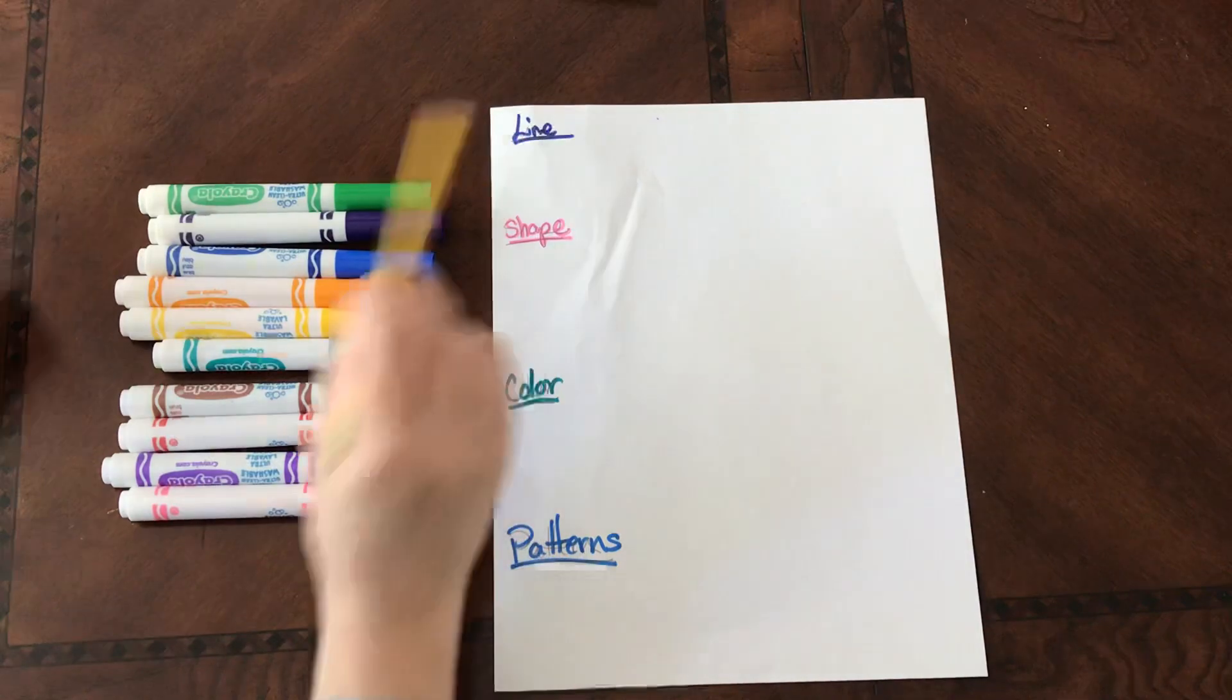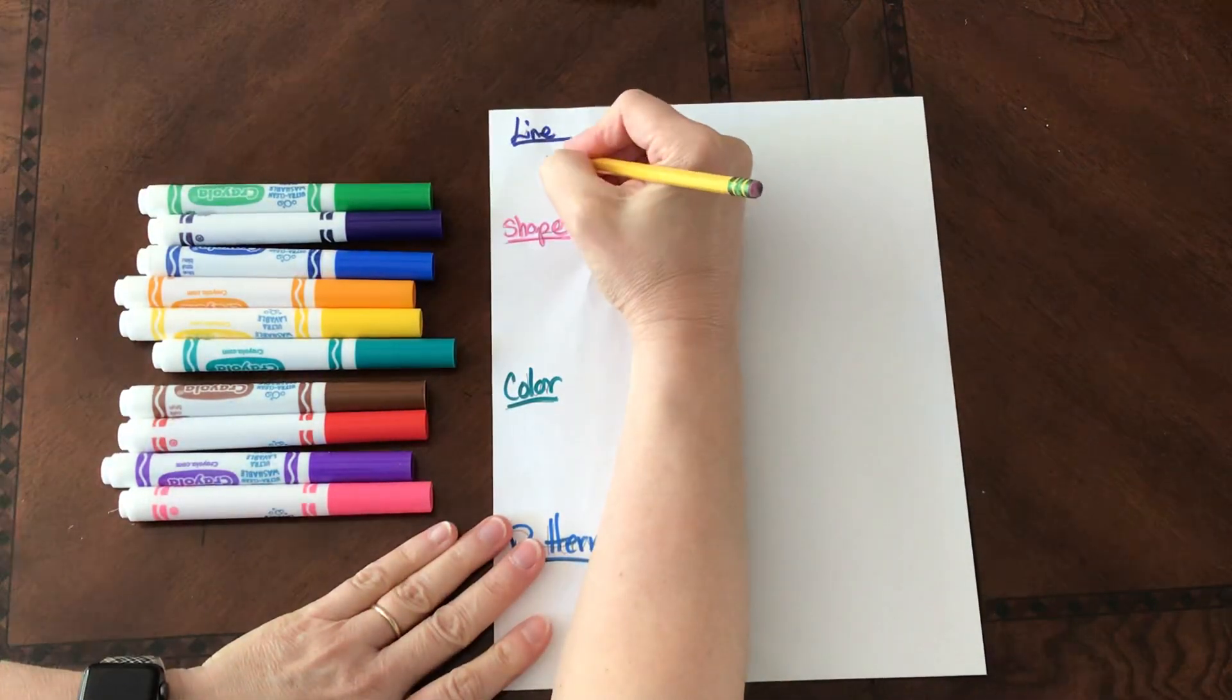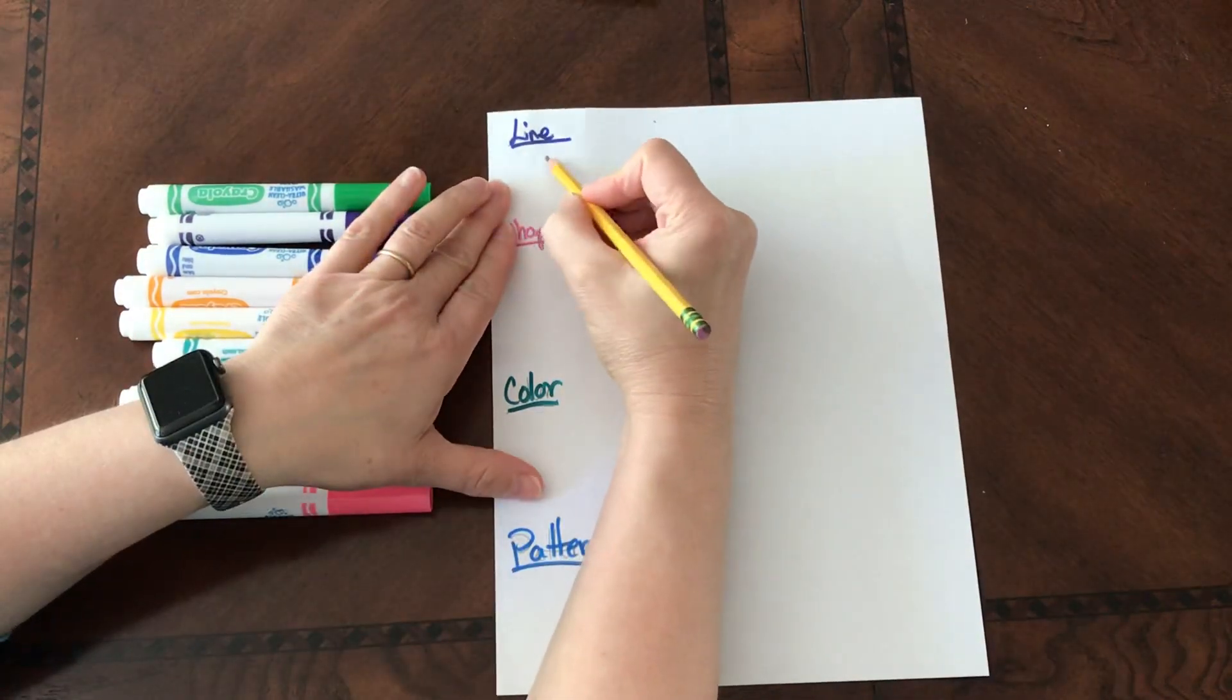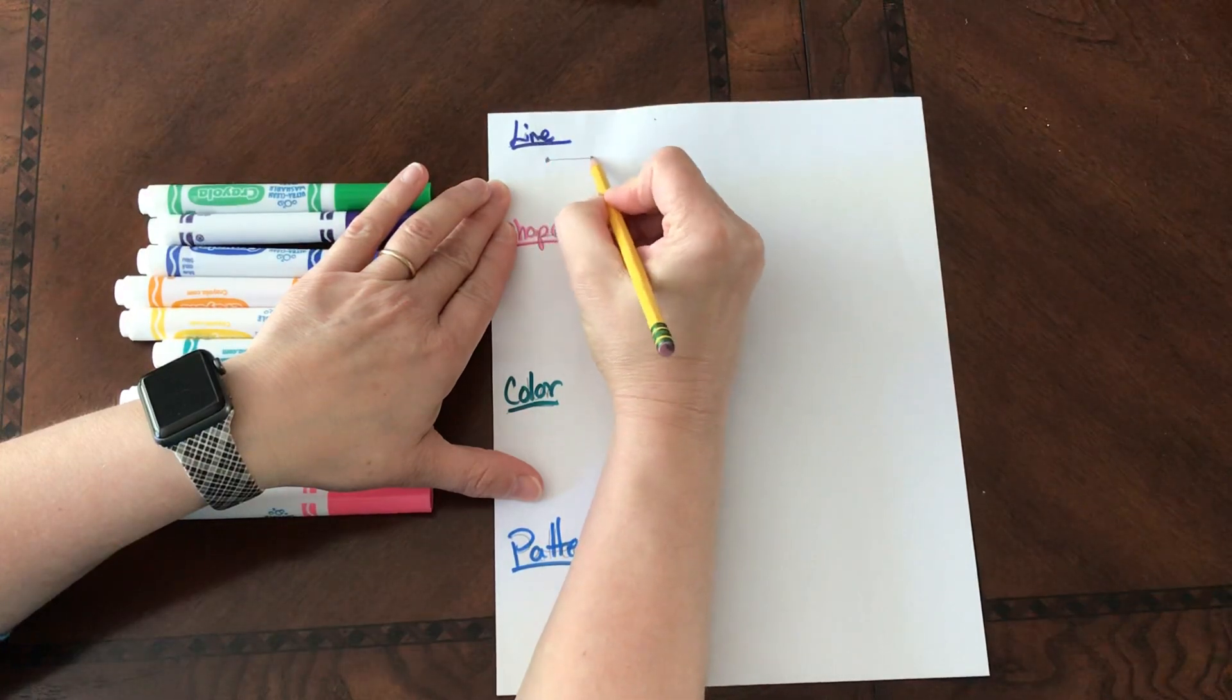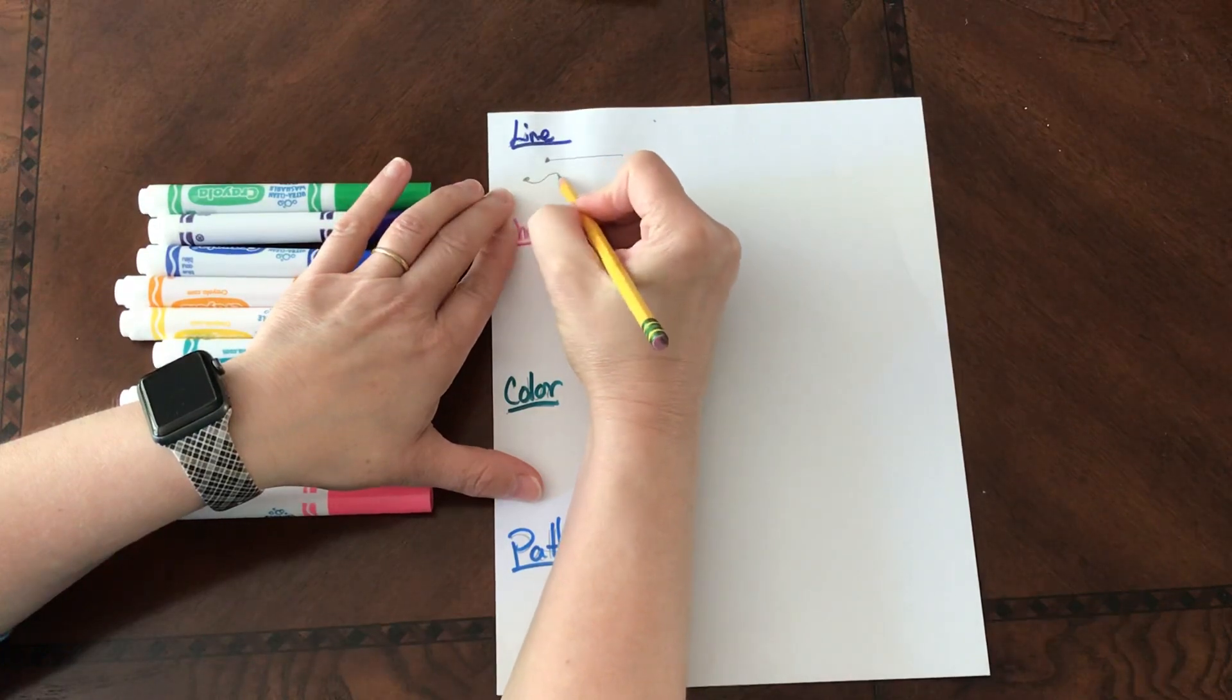We're going to start with line. Did you know that line is like a dot that's going for a walk? So when that line goes for a walk, that little dot can walk in a straight line.